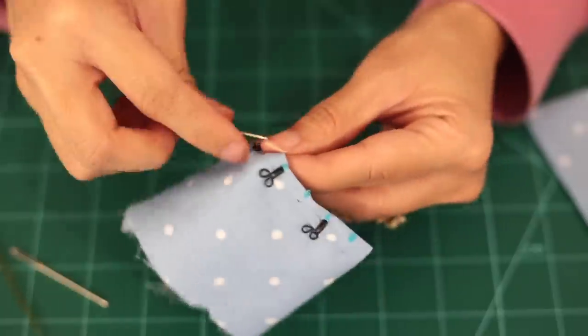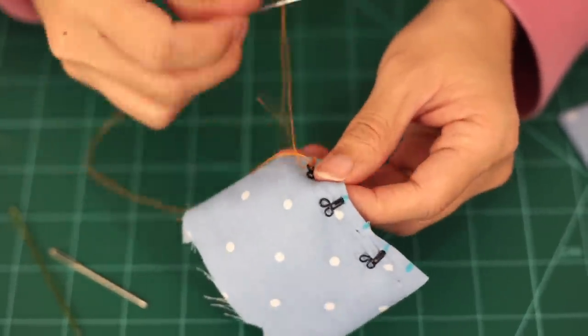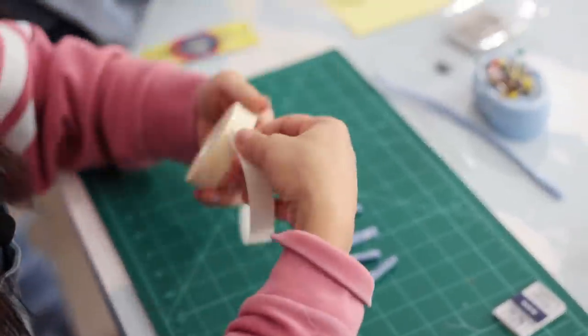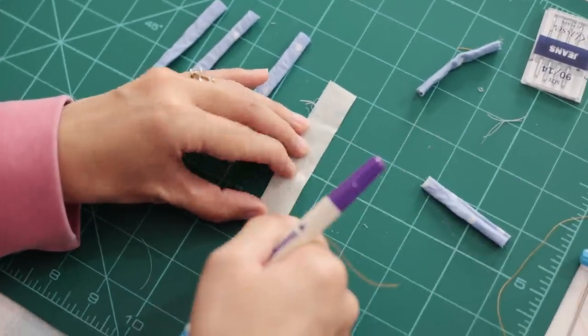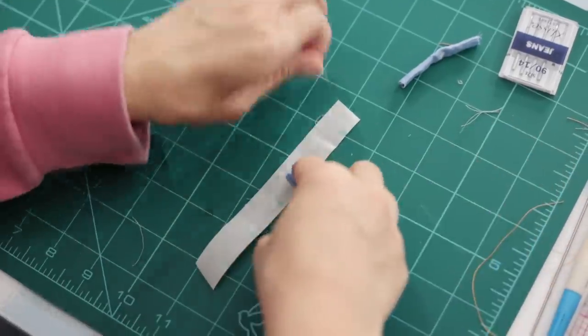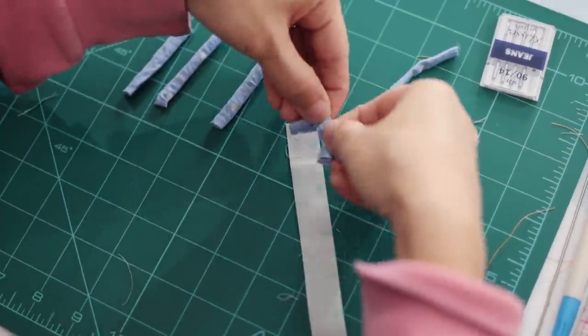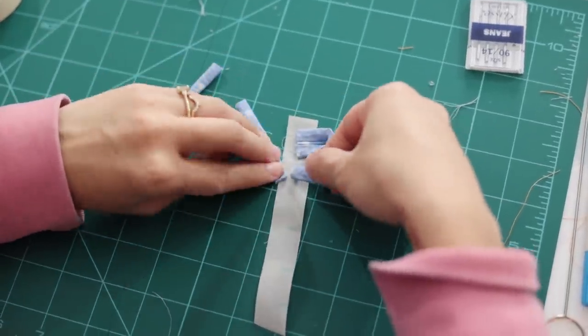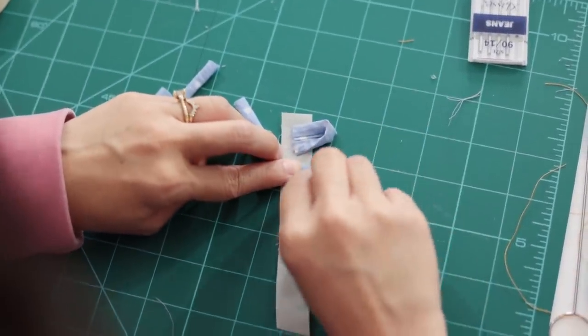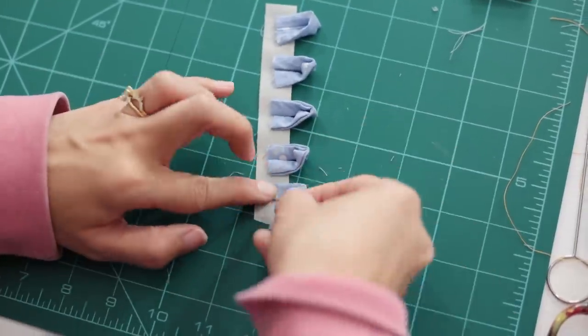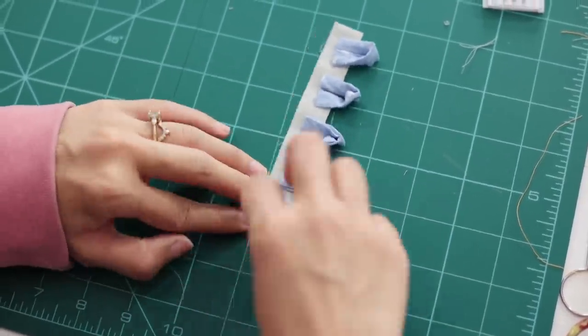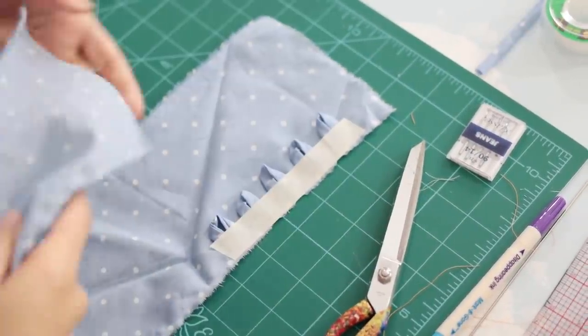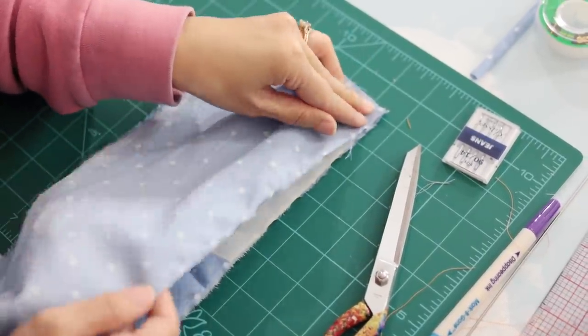Sewing trick number three: Loops can be tedious to sew because they move around and you end up sewing them out of place. To solve that issue, just grab some masking tape. Evenly mark the placement of your loops on the tape, then simply stick your loops on. You want to stick your loops all the way to the side of the tape edge instead of in the middle like me—I'll explain why later. Now you can line up the edge of the tape with the edge of your fabric and sandwich the loops in between. You can just sew as usual over the tape.